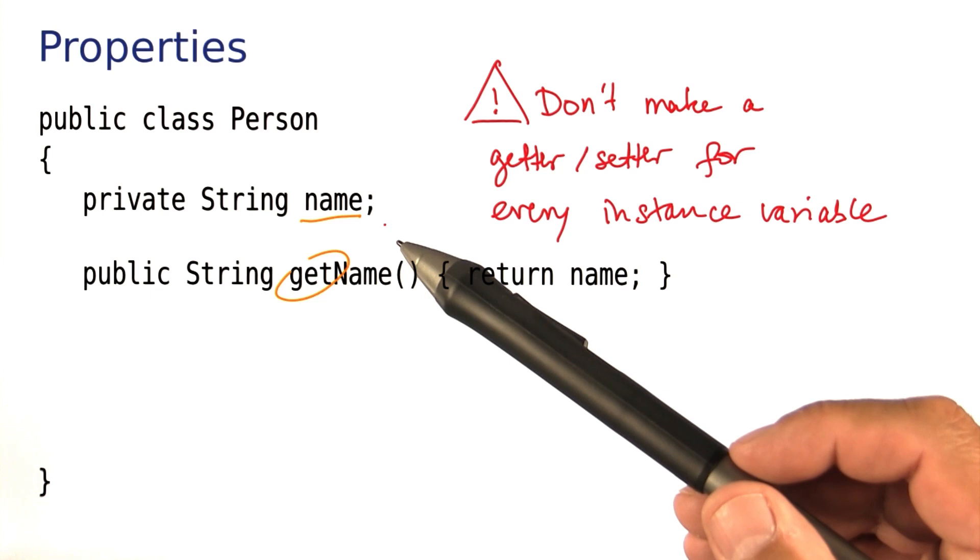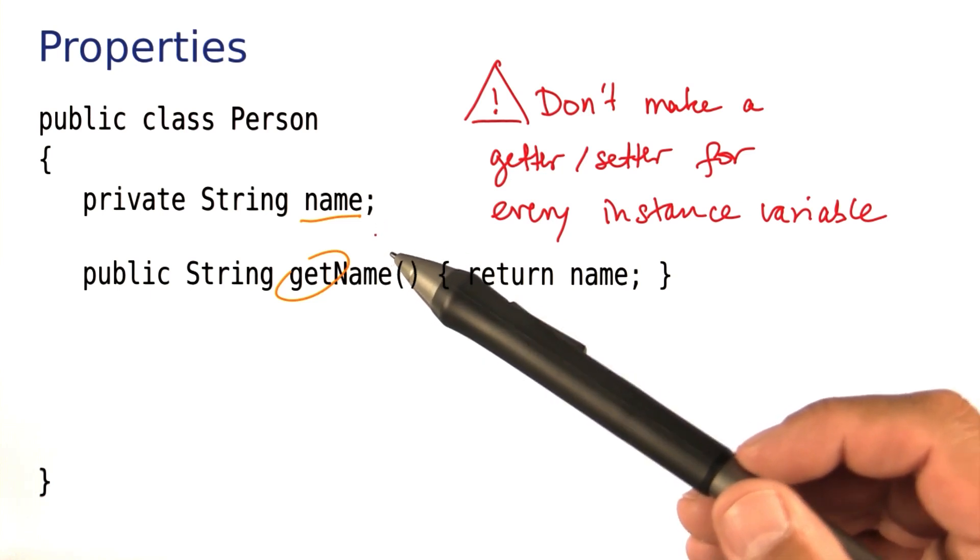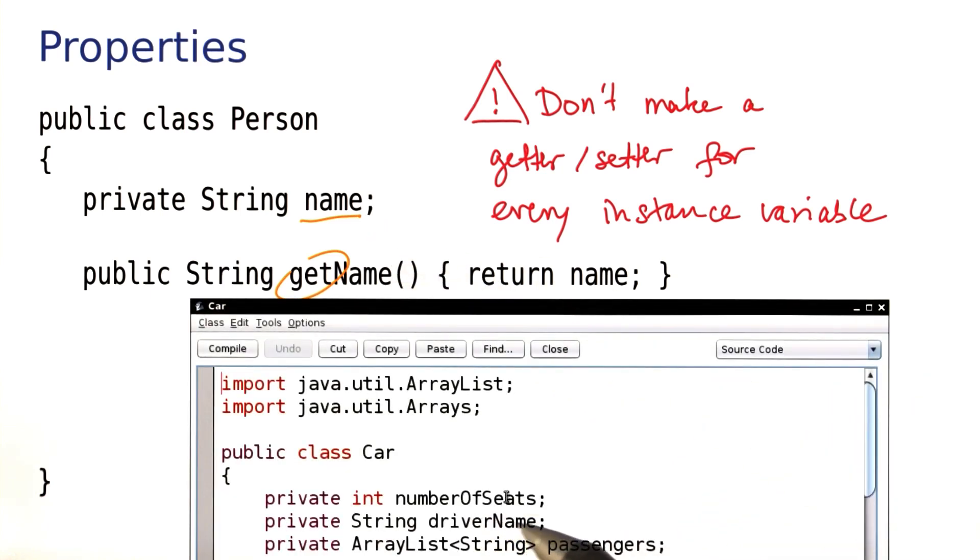Well let's practice that with yet another variation of the car class. This car class has a number of instance variables. And I'd like you to look it over and add getters and setters for those where it's appropriate and not add them for those where it's not.